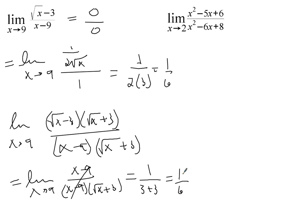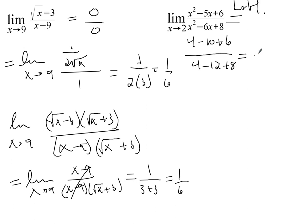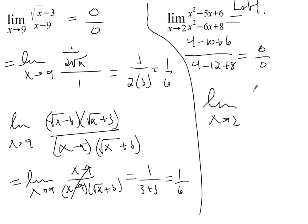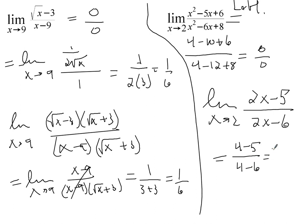For the second one, you can either factor the numerator and denominator and cancel, or just use L'Hôpital's rule — I think it's easier to use L'Hôpital's rule. But first, confirm this is 4 minus 10 plus 6 over 4 minus 12 plus 8, which is 0 over 0. Using L'Hôpital's rule, we get the limit as x approaches 2 of 2x minus 5 over 2x minus 6, which is 4 minus 5 over 4 minus 6, or negative 1 over negative 2, or 1/2.